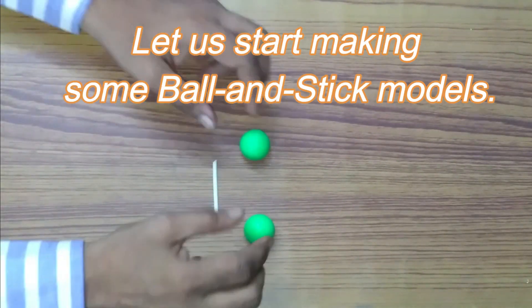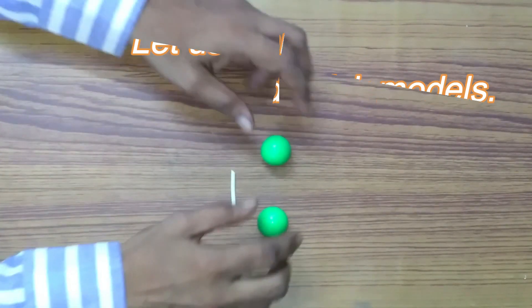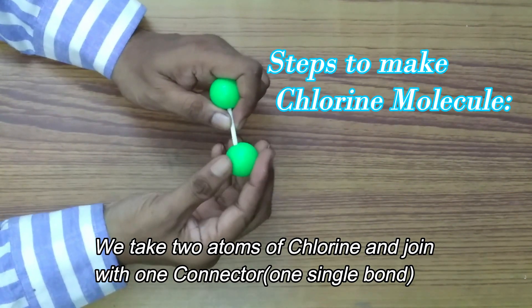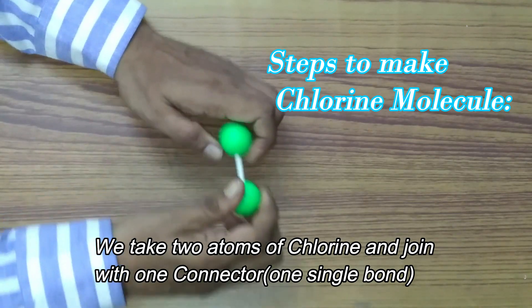We will make first chlorine molecule. To make chlorine molecule we take two atoms of chlorine and we join by one connector so it forms chlorine as Cl2.